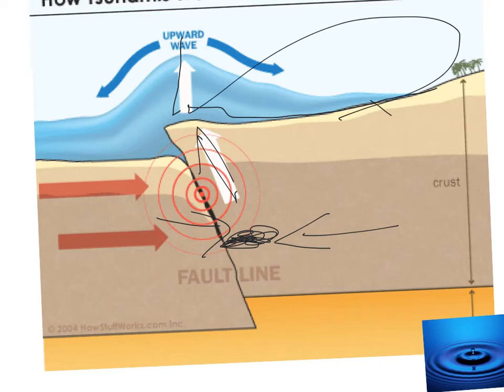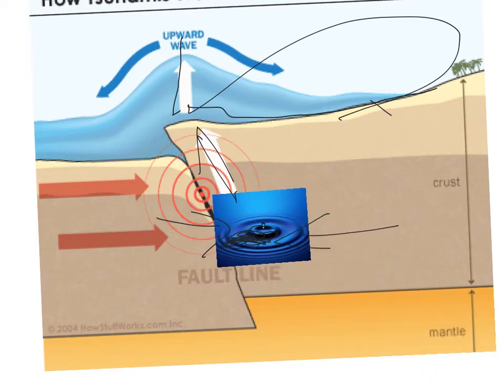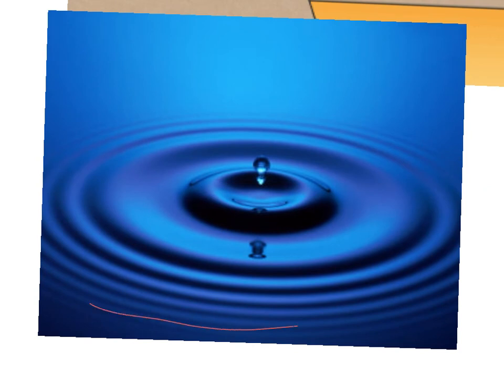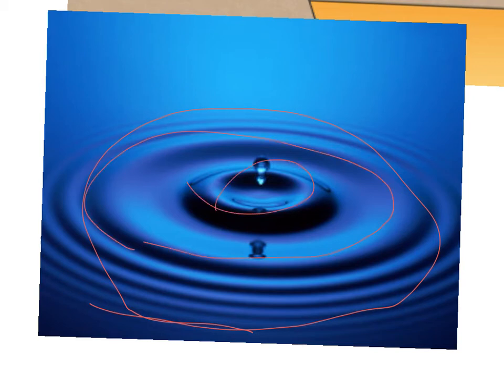The water will kind of ripple like this. So, first there are these little rings of water. Then the tsunami gets bigger, like these two or three here. It's kind of like how you drop a pebble in a pond and the water then ripples, like this. And that's how a tsunami starts.